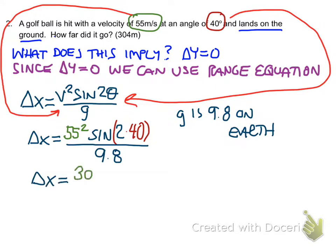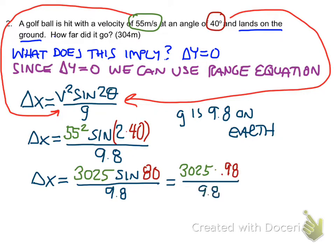So 55 squared is 3025. So now I have sine 80 because that's twice my 40 degree angle, all divided by 9.8. Once I put the numbers in there, I find out that this thing is going to go about 302 and a half meters.